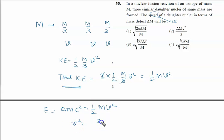So V square is two delta M into C square upon M. We have to calculate the value of the V. It will be written as C root two delta M upon M. So right answer of this problem is option three, that is C root two delta M upon M.